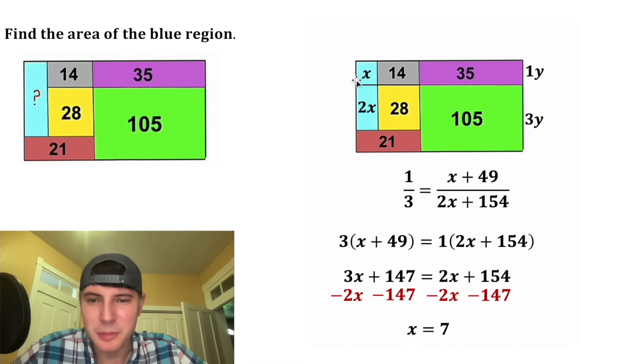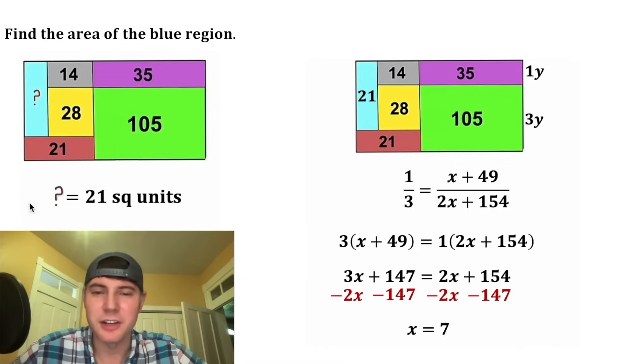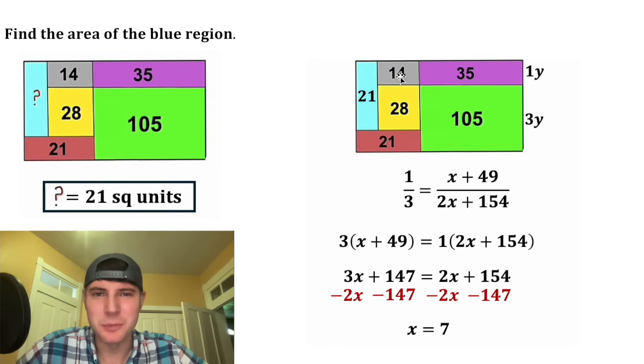So now we can come back up here, and in the place of the x, we can plug in 7. And in the place of the 2x, we can plug in 14. And 7 plus 14 is equal to 21. So the area of the blue region is equal to 21, so our question mark is equal to 21 square units. This is the answer to our question, let's put a box around it.